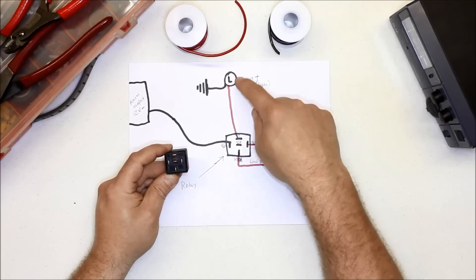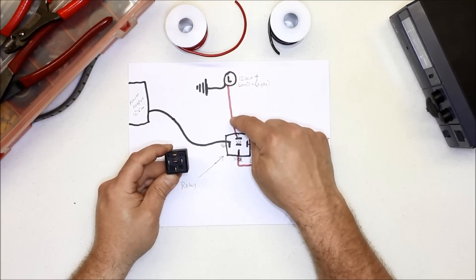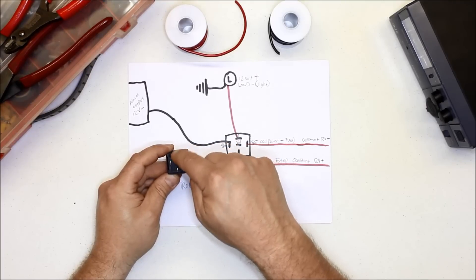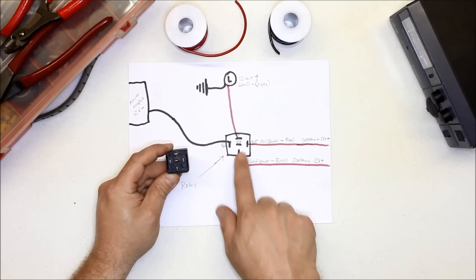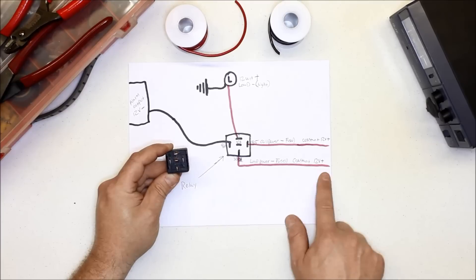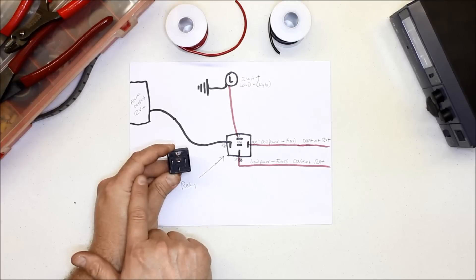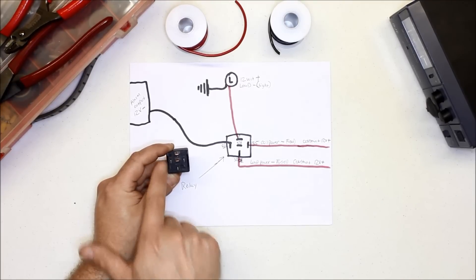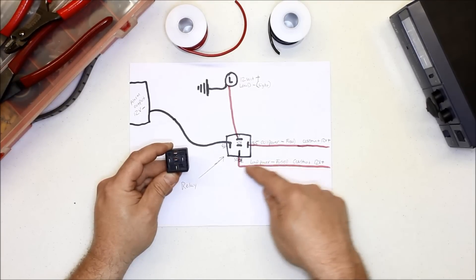On the switching side, you would take your 12 volt load wire and that would go to one side of the switching terminals. Then the other side would go to a constant 12 volts.